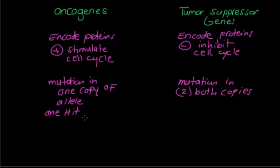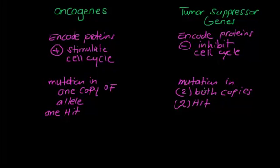Tumor suppressor genes involve a two-hit process, meaning you need mutations in two copies of the allele. To summarize: mutation in one copy of the allele in the case of oncogenes, while in the case of tumor suppressor genes, you need mutations in two copies of the alleles.